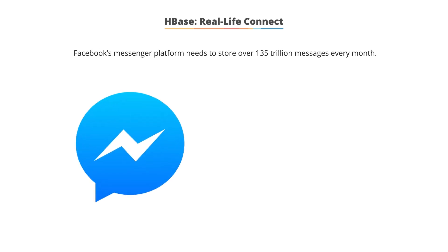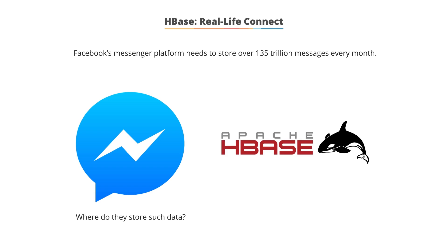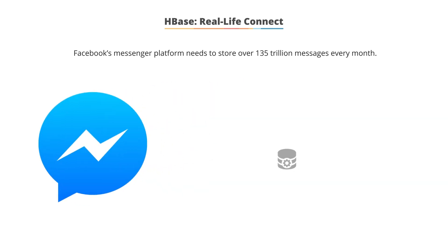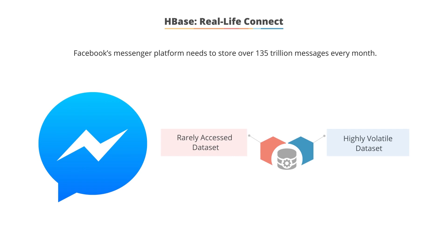Facebook's Messenger platform needs to store over 135 trillion messages a month. Where do they store such data? The answer is HBase. Facebook chose HBase because it needed a system that could handle two types of data patterns: an ever-growing dataset that is rarely accessed, and an ever-growing dataset that is highly volatile. You read what's in your inbox, and then you rarely look at it again.